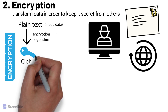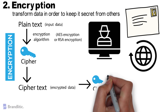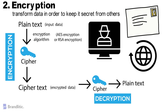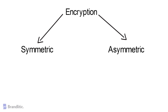Further, the data to be encrypted — also known as plain text — is transformed using an encryption algorithm like AES or RSA encryption, using a secret key called a cipher. The output is the encrypted data, also called ciphertext. And finally, the secret key can be used by intended recipients to convert it back to plain text. There are primarily two types of encryption algorithms: symmetric and asymmetric encryption.